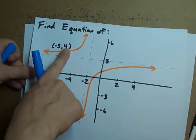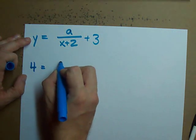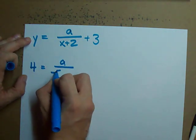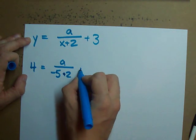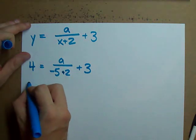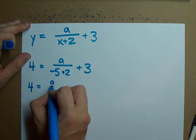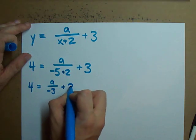X is negative five. Y is four. So plug that in. X is negative five. Y is four. Here we go. Solve for a. 4 equals a over negative 5 plus 2 is negative 3 plus 3.